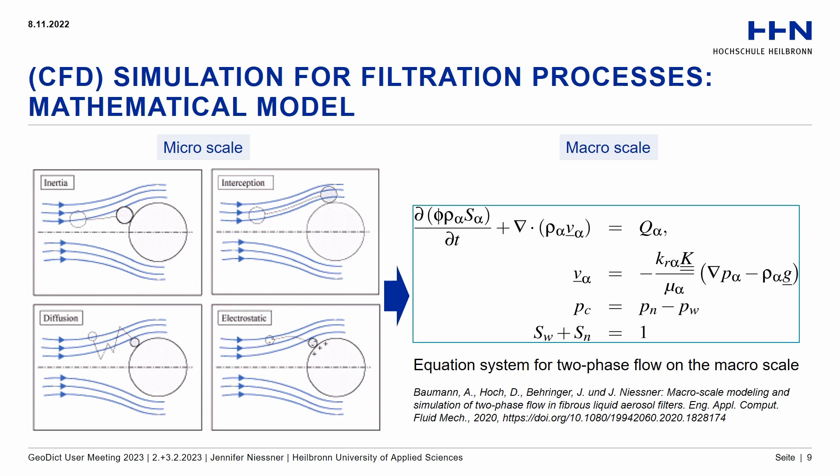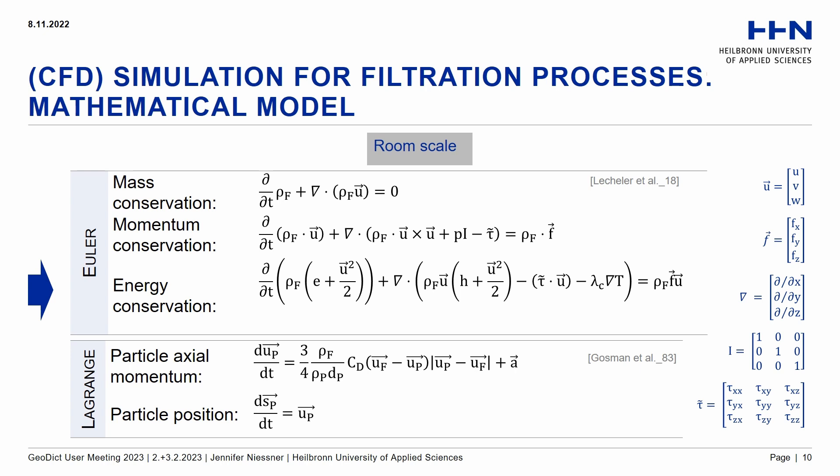Philipp Eichheimer will talk in the next talk about coalescence. Once the liquid phase becomes mobile, one arrives at the macro scale where typically an Eulerian-Eulerian approach is used. Mass conservation equations are solved for both phases and the extended Darcy's law is used as the momentum balance equation, supplemented by closure relations — capillary pressure equals the difference of phase pressures and saturations sum to one. On the room scale, an Eulerian-Lagrangian approach is again used, but thermal processes also play a role, so energy conservation is simulated in addition to mass and momentum.